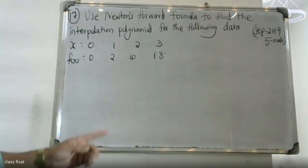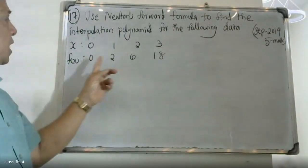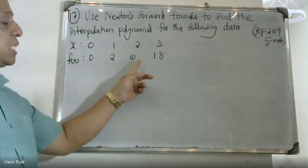Show it, sir. X in the value is 0, 1, 2, 3. Corresponding f of X is 0, 2, 6, 18.